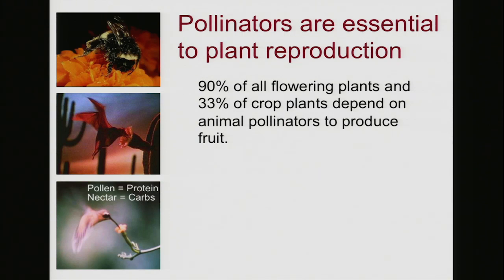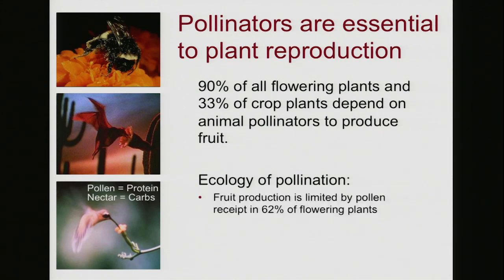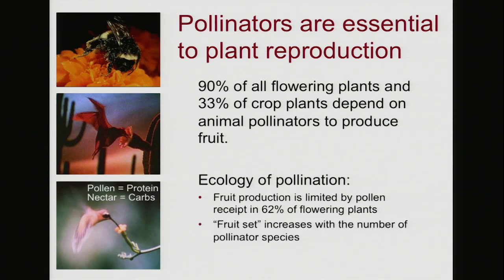Ninety percent of all flowering plants, and a third of our crop plants, depend on animal pollinators to produce fruit. The ecology of pollination is quite clear that fruit production is limited by pollen receipt in nearly two-thirds of flowering plants. The more pollen you receive from your pollinators, the more fruit you produce, and your fruit set increases with the number of different pollinator species you have. Plants really benefit from pollinators, and they pay for it by giving the pollinators protein and carbohydrates.